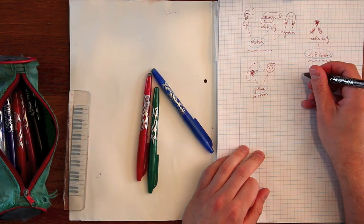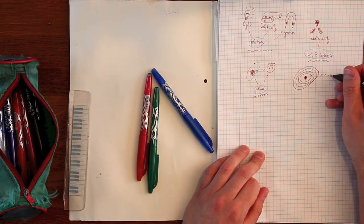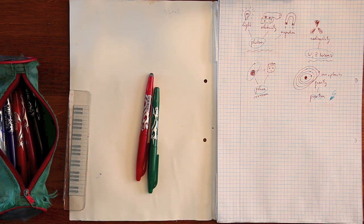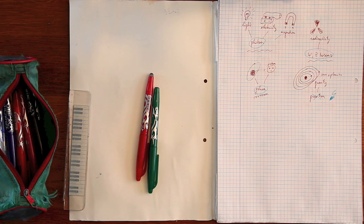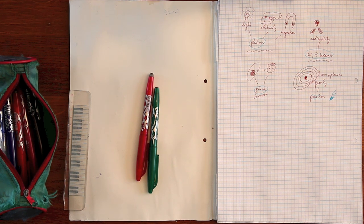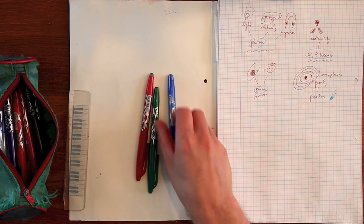But for gravity, where the corresponding boson would be the graviton, it is not possible to do this within the current framework. The reason that it is not possible is that gravity has got a special property from general relativity. It is ultimately tied to spacetime itself.